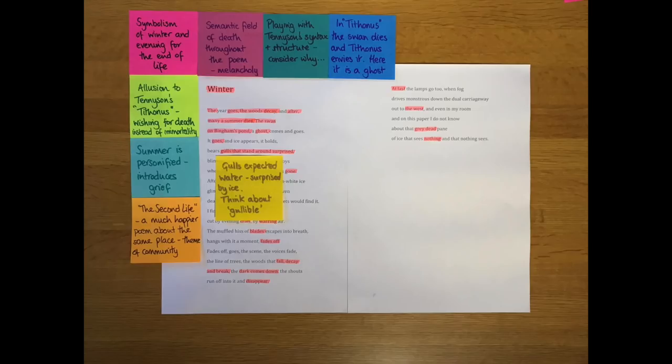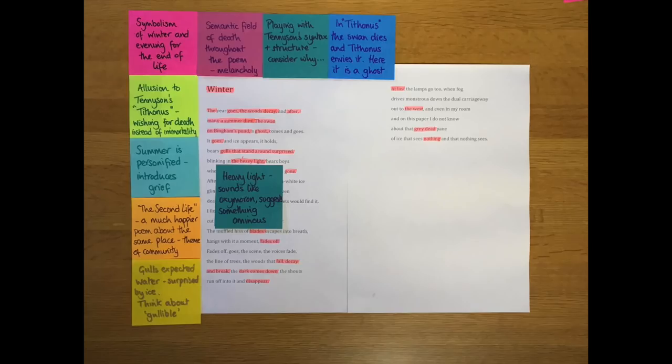And we move from the swan to a much smaller lighter bird that stands on the ice when the swan has gone. The gulls that stand around surprised. They're surprised by the ice because they've come down to land because they know there's water there. But I think there's also a nice little joke here. To gull somebody, you'll find it as another definition of the word gull in a dictionary, is kind of to trick them and to make them believe something that's not true for mischievous reasons. And it's where we get the word gullible, somebody who's easily taken in. So the idea that he uses gulls here, and the gulls have been taken in by the water that turns out to be ice, I think is just a nice little linguistic joke.